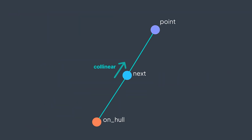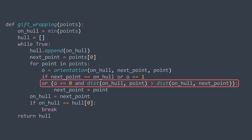What if three points are collinear? We want to minimize points on the hull, so if the orientation is collinear, point becomes the new next-point only if it is farther from on-hull than the current next-point. That way we still cover both collinear points by taking only the farther one. In code, we also update when the orientation is collinear and the distance from on-hull to point is greater than the distance from on-hull to next-point.